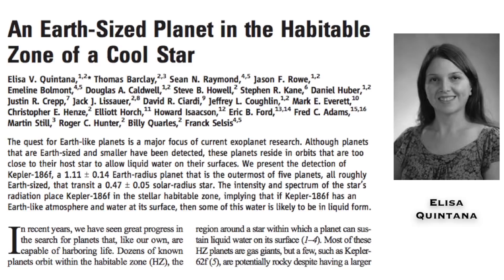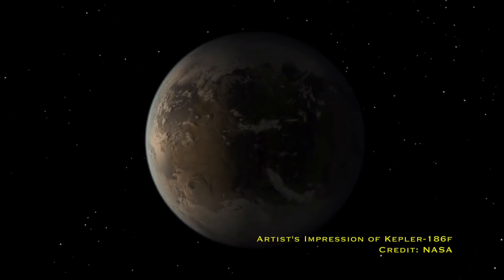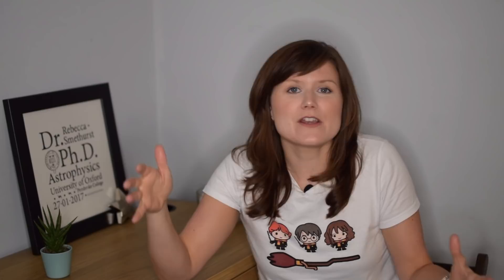2014 then saw the detection of an Earth-sized planet in a habitable zone by Eliza Quintana and collaborators. Kepler-186f is 10% bigger than Earth, and it is the outermost of a five-planet system, all of which are in the habitable zone around their star.